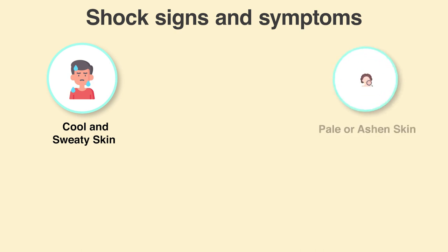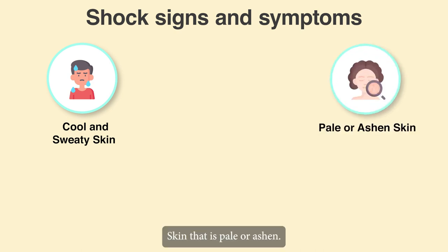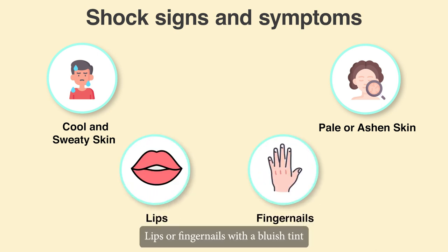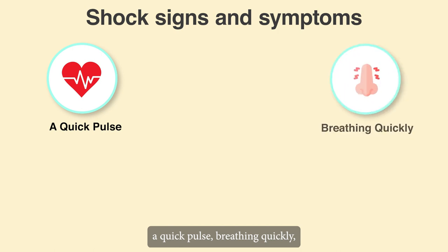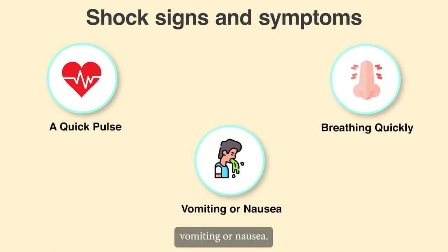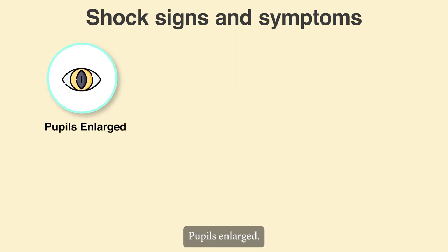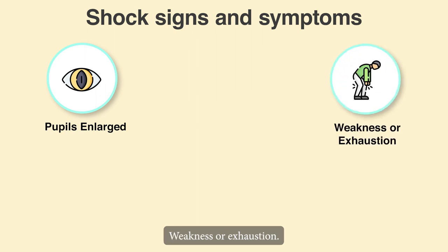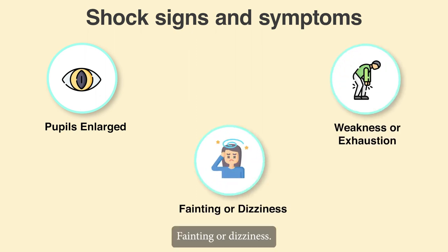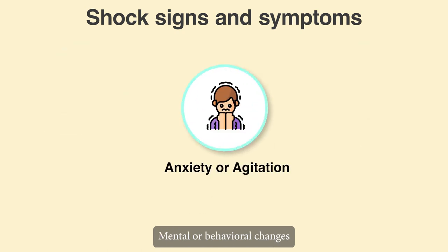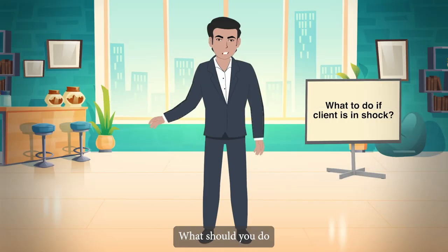Symptoms of shock include skin that is cool and sweaty, skin that is pale or ashen, lips or fingernails with a bluish or gray tint — in the case of dark complexions — a quick pulse, rapid breathing, vomiting or nausea, enlarged pupils, weakness or exhaustion, fainting or dizziness, and mental or behavioral changes such as anxiety or agitation.